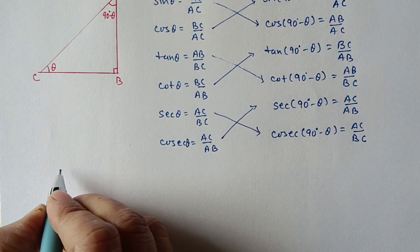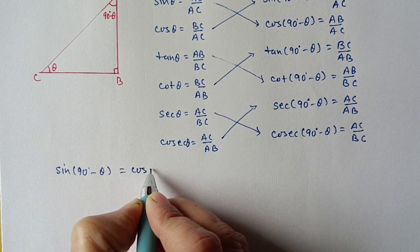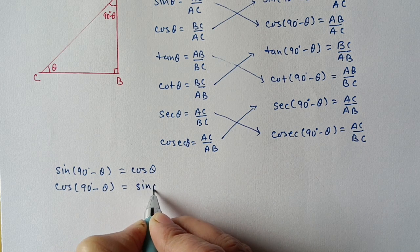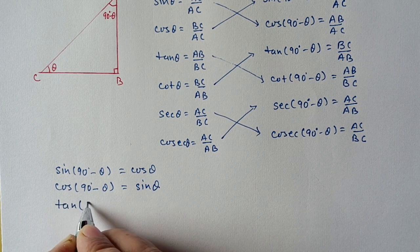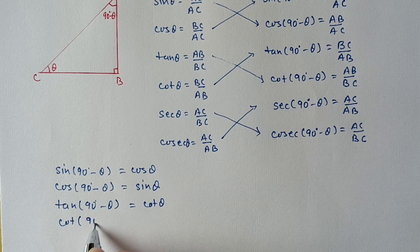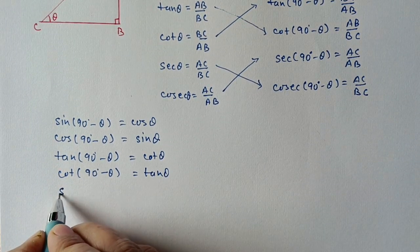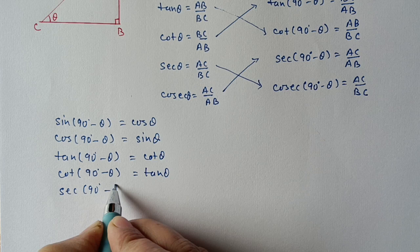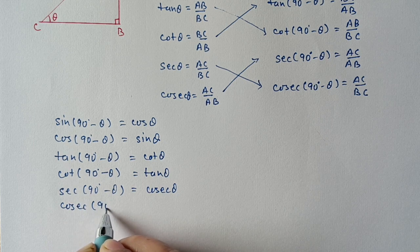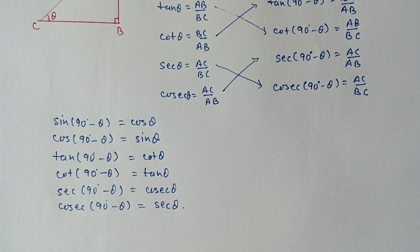We can also write these relations the other way: sin(90 − θ) = cos θ; cos(90 − θ) = sin θ; tan(90 − θ) = cot θ; cot(90 − θ) = tan θ; sec(90 − θ) = cosec θ. These relations we have to use in the exercise to simplify the questions.